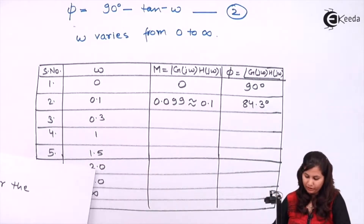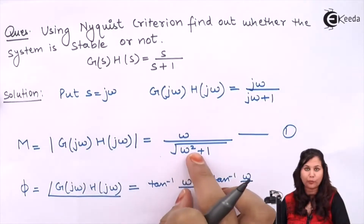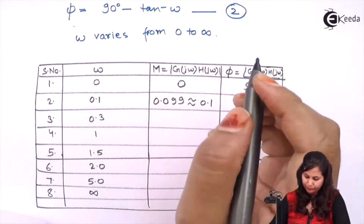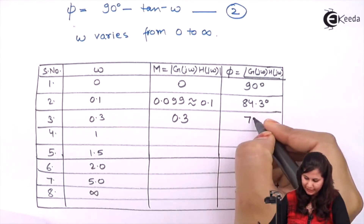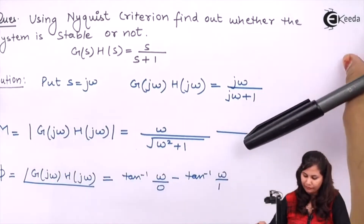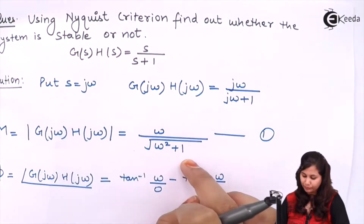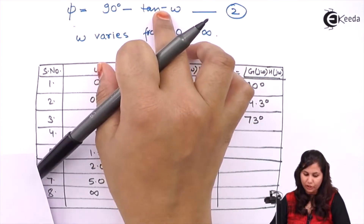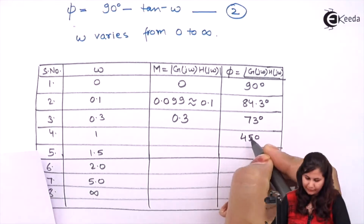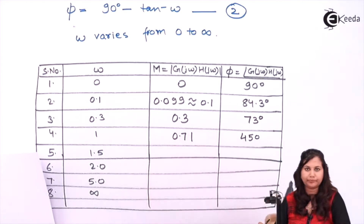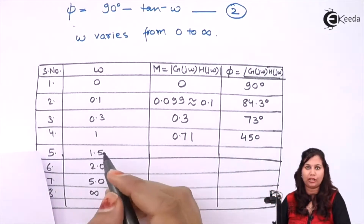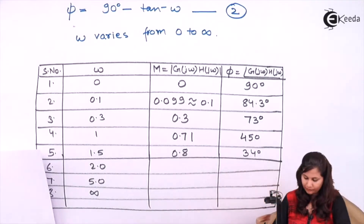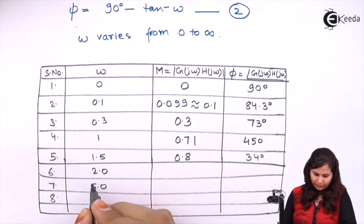For ω equals to 0.3, magnitude is 0.3 upon √(0.3² + 1), approximately 0.3, and phase angle is 90 minus tan inverse of 0.3, which is 73 degrees. For ω equals to 1, magnitude is 1 upon √(1+1) = 1/√2 = 0.71, and phase angle is 90 degrees minus tan inverse of 1, that is 45 degrees, giving 45 degrees. For ω = 2.0, magnitude is approximately 0.9.